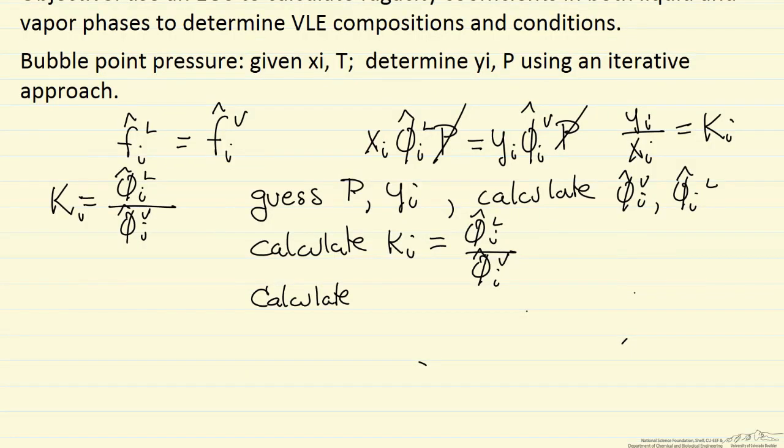Once we have ki, we can calculate a new value for the mole fraction in the vapor phase. So yi, new values for yi, equals ki times xi. This is known, and this we calculated from the fugacity coefficients.